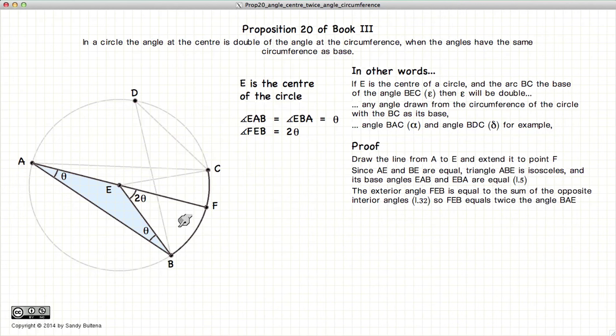That's from Proposition 5 of Book 1. Now from Proposition 32 of Book 1, the exterior angle of a triangle is always the sum of the opposite angles. So theta plus theta is 2 theta. Or in other words, BEF is equal to 2 theta.